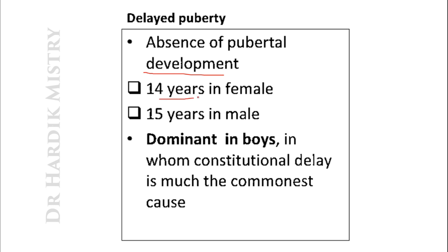Delayed puberty refers to the absence of pubertal development after 14 years in females and after 15 years in males. It is more commonly seen in boys, in whom constitutional delay is the most common cause. Those are the two applied aspects: precocious or early puberty, and delayed puberty.